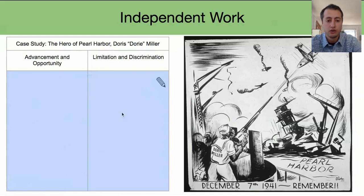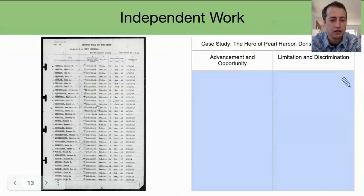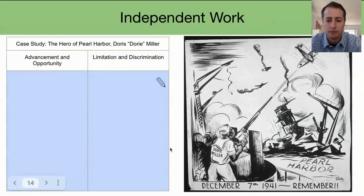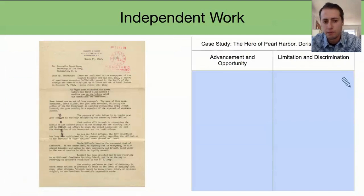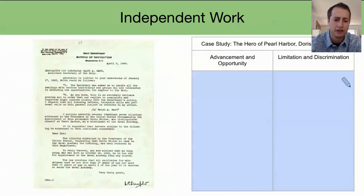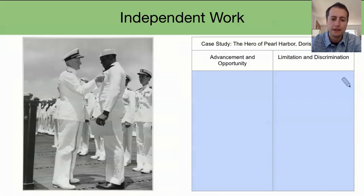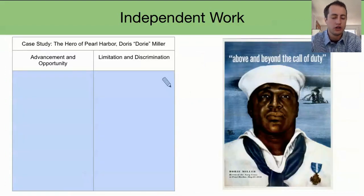The Dorie Miller case study is first, and it features primary source documents. You have the crew list from his ship, a political cartoon showing him manning the guns, and a number of letters — both recognizing his efforts and questioning the role of African Americans in the military. In my mini lesson I demonstrate this one for students, so you can check that out for more detail. He was also used in posters to recruit for the military during the war.